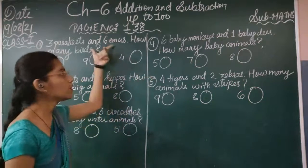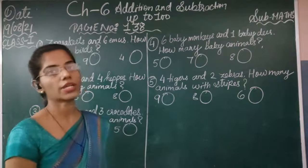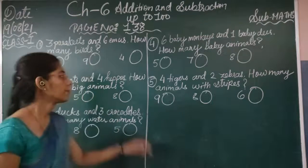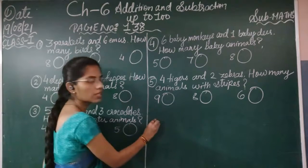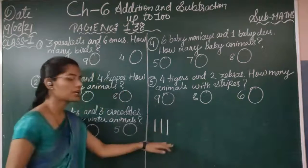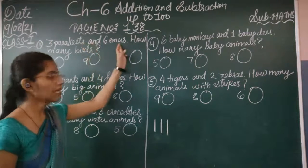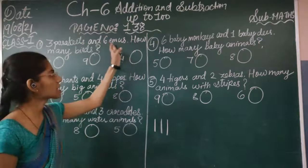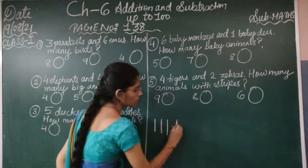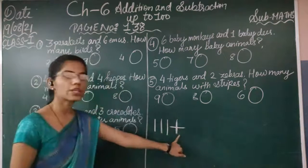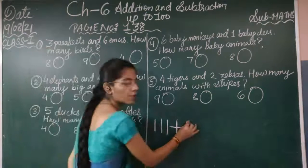Now we will see the numerical value and then add these values. First of all, parakeets is 3 — it means we draw 3 lines: 1, 2, 3. Next numerical value is 6 for the emus. When we do addition, what symbol do we use? Plus. So we are going to draw 6 lines: 1, 2, 3, 4, 5, 6.